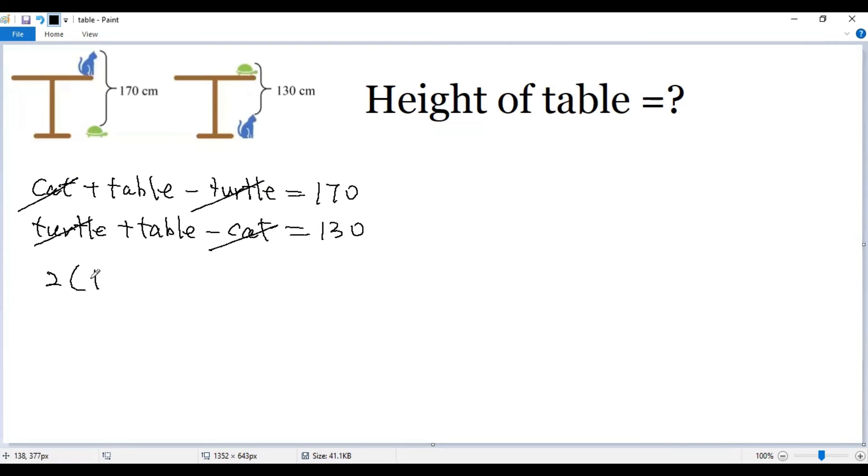So, two times table equals the right side: 170 plus 130. We get 300. Both sides divided by 2, we get table equals 150 centimeters.